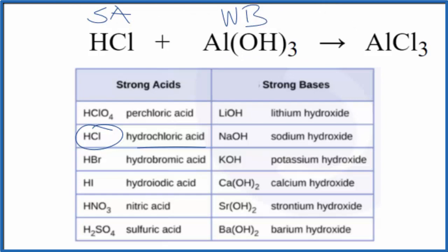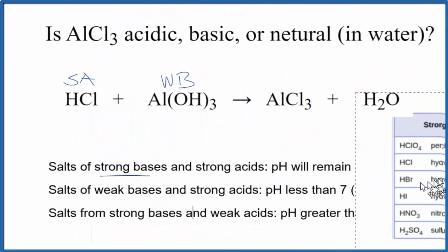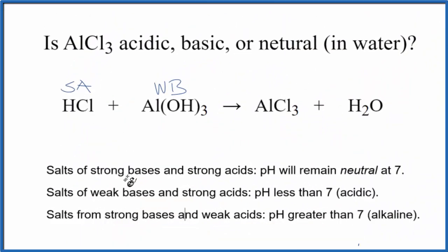We can use the rules to figure out whether AlCl3 is acidic, basic, or neutral. In this case, we have a strong acid and a weak base. That tells us that the pH of this solution will be less than 7.